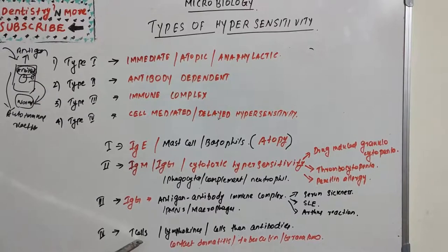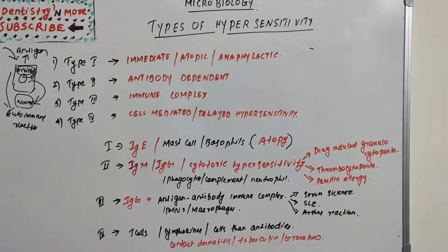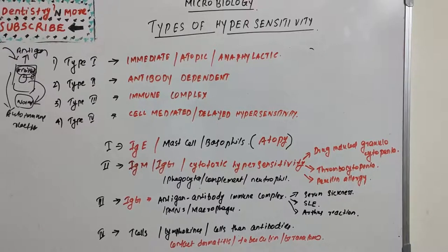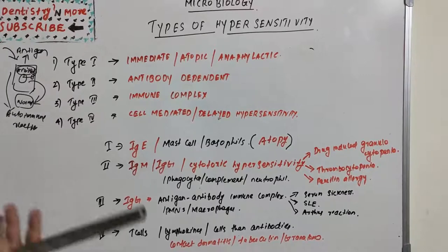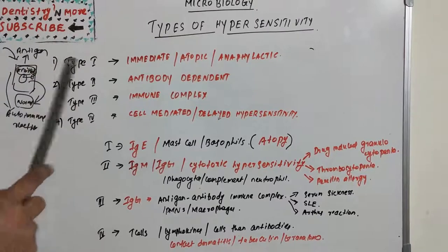Type 4 is the delayed type, where the reaction involves sensitized T cells — there is no antibody involved. Sensitized T cells release lymphokines as mediators and amplifiers, so they are mediated by cells rather than antibodies — that is a peculiarity of Type 4. Examples include contact dermatitis, transplant rejection, and granuloma formation. The response usually comes after 48 to 72 hours, and continued macrophage activation can cause chronic inflammation, tissue lesions, scarring, and granuloma formation.